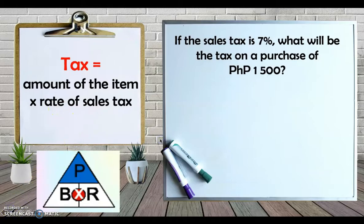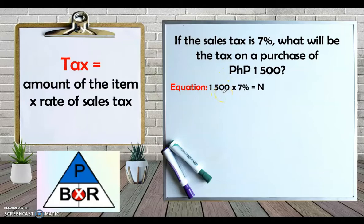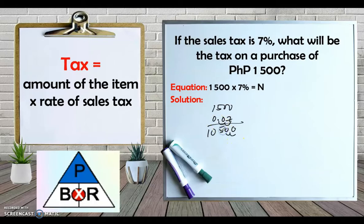Example: If the sales tax is 7%, what will be the tax on a purchase of 1,500 pesos? Since tax is a percentage, we multiply the base (the original price of 1,500) times 7% (0.07). 1,500 times 0.07 equals 105. Counting the decimal places, the tax is 105 pesos. The total amount the buyer will pay is 1,500 plus 105 pesos. Note that in grocery stores or restaurants, the tax is usually already included in the price of the item.